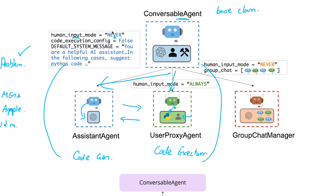The values for human input mode could be 'never', 'always', or 'terminate'. If the value is 'never', there is no chance that the user is going to provide an input in between the exchange of messages between user and assistant. If it is 'always', then for every single message exchange the user is asked for feedback. If it's 'terminate', once the code execution is complete, at the end of code execution there will be a request for the user to provide feedback.